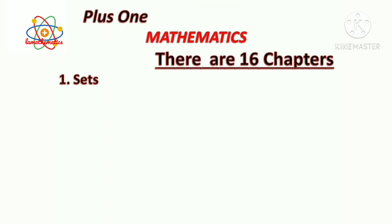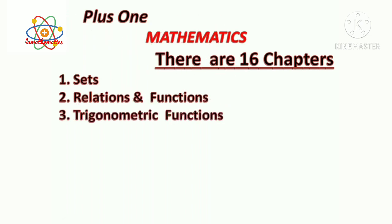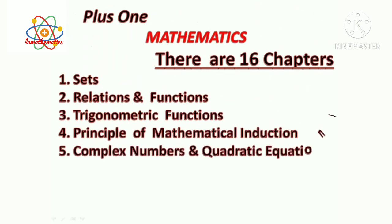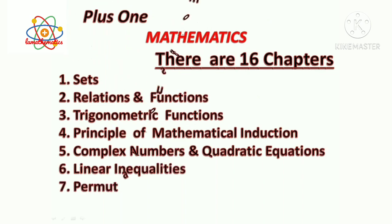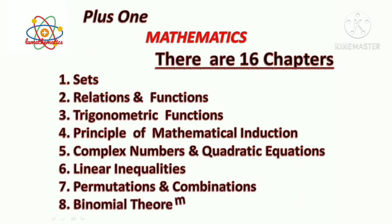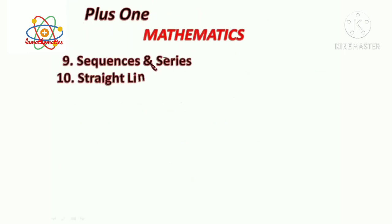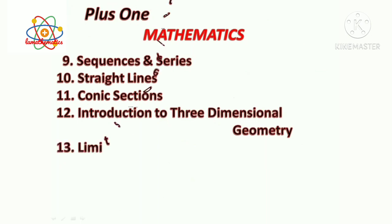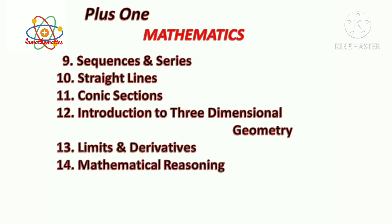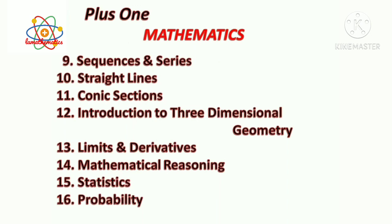For Plus One Mathematics, there are 16 chapters: 1. Sets, 2. Relations and Functions, 3. Trigonometric Functions, 4. Principle of Mathematical Induction, 5. Complex Numbers and Quadratic Equations, 6. Linear Inequalities, 7. Permutations and Combinations, 8. Binomial Theorem, 9. Sequences and Series, 10. Straight Lines, 11. Conic Sections, 12. Introduction to 3-Dimensional Geometry, 13. Limits and Derivatives, 14. Mathematical Reasoning, 15. Statistics, 16. Probability.